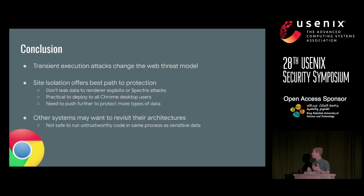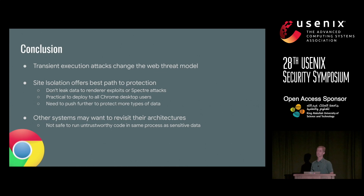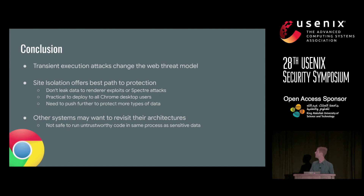In conclusion, the defense we built as a second line of defense against renderer exploits also proved very important for transient execution attacks, which pose a new threat to the web security model because they don't require any bugs in the browser. Site isolation offers the best path to protection by not leaking data to these attackers, and it was practical to deploy to all Chrome desktop users. This type of architecture change may be something other systems need to consider if they run untrustworthy code within the same process as sensitive data.